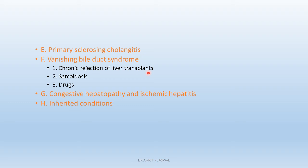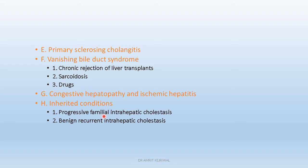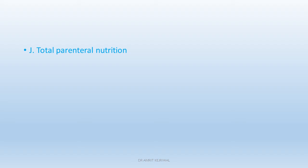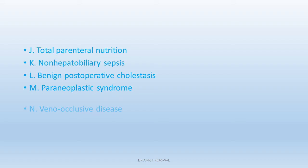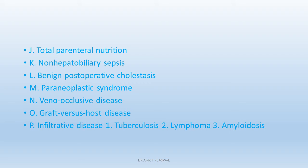Vanishing bile duct syndrome can be seen in chronic rejection of liver transplants, sarcoidosis, and certain drugs. Congestive hepatomegaly and ischemic hepatitis can also cause cholestatic hepatitis. Inherited conditions include progressive familial intrahepatic cholestasis and benign recurrent intrahepatic cholestasis. Other causes include total parenteral nutrition, non-hepatic hepatobiliary sepsis, benign post-operative cholestasis, paraneoplastic syndromes, veno-occlusive disease, graft-versus-host disease, infiltrative diseases such as tuberculosis, lymphoma, and amyloidosis, and infections such as malaria and leptospirosis.